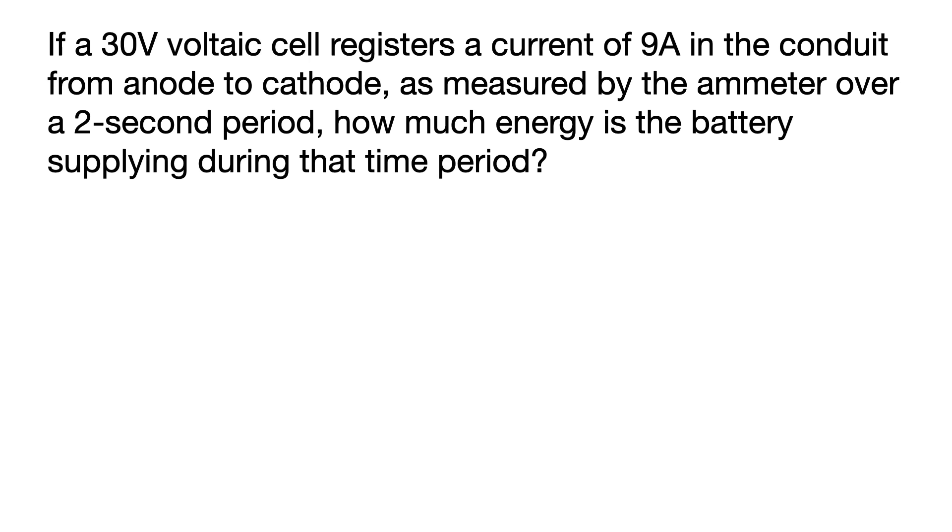If a 30-volt voltaic cell registers a current of 9 amps in the conduit from anode to cathode as measured by the ammeter over a 2-second period, how much energy is the battery supplying during that time period? That's a lot to process, and then have to recall a formula to use to solve this? Well, no worries.